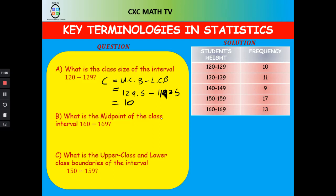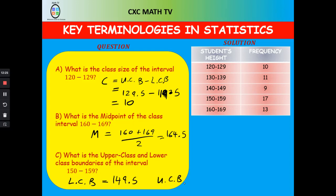What is the midpoint of the class interval 160 to 169? Midpoint is the upper limit plus the lower limit divided by 2. So 160 + 169 = 329, divided by 2 gives 164.5. The lower class boundary is 160 − 0.5 = 159.5, and the upper class boundary is 169 + 0.5 = 169.5.